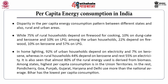Almost 80% of the rural energy used is derived from biomass. Among the states, the highest per capita consumption is in the union territories. In the rest, Pondicherry, Goa, Punjab, Gujarat, Haryana and Delhi use more than the national average, and Bihar has the lowest per capita consumption.